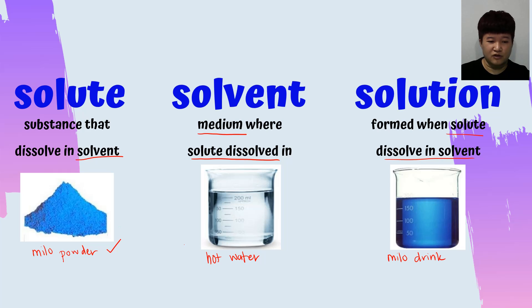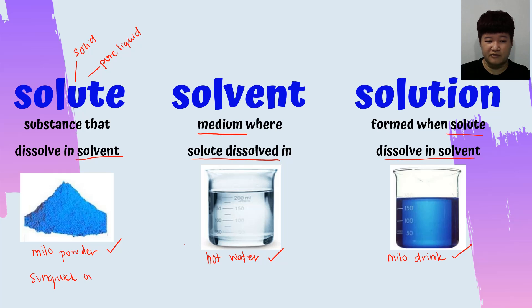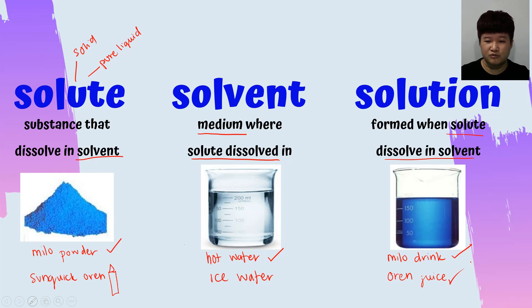Solute is not necessarily only in solid form; solute can also be in pure liquid. For example, other than Milo powder, we can have Sunquick orange. When you have the pure Sunquick orange from the bottle, you put it into your ice water. The ice water acts as the solvent, and then you produce your orange juice, which is the solution. I hope you are very clear with what is solute, what is solvent, and what is solution — these terms are very important in learning concentration.